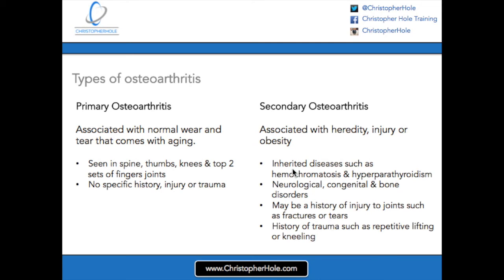Hereditary diseases such as hemochromatosis or hyperparathyroidism are to do with iron, calcium, or copper storage. Neurological diseases that result in the loss of nerve function, congenital disorders relating to imbalance in the joints, and bone disorders that affect the joints themselves are also associated with secondary osteoarthritis.